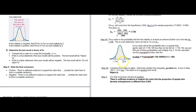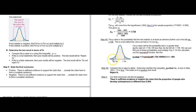For our two-tailed test, we want the area in the tail to the right of 1.736. Using the normal CDF function on the graphing calculator, we put in 1.736 as the lower bound, a large positive number as the upper bound, with mean zero and standard deviation one — a standard normal distribution. That gives us the tail area, and because this is a two-tailed test we multiply by two. Altogether, that gives us a p-value of 0.083.